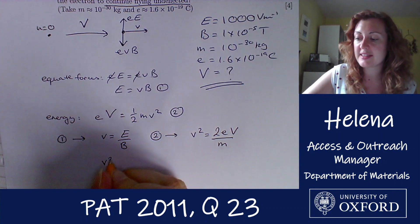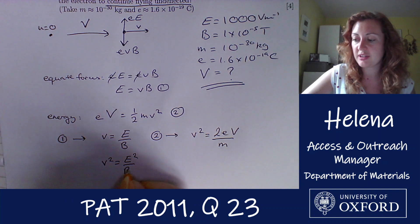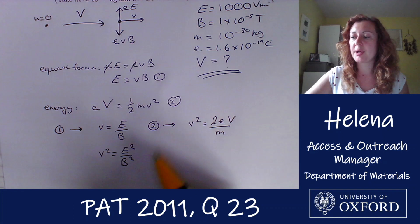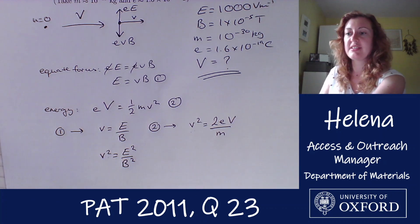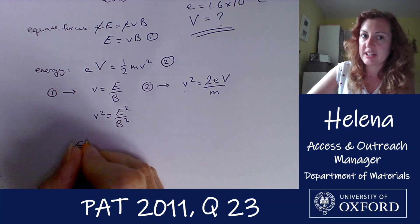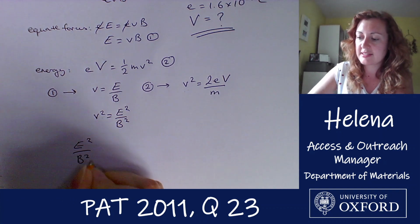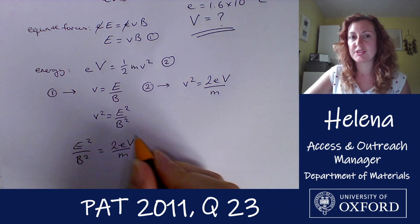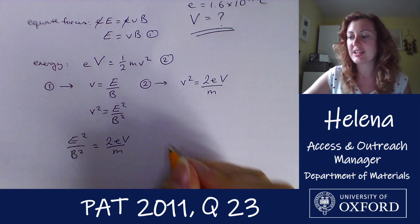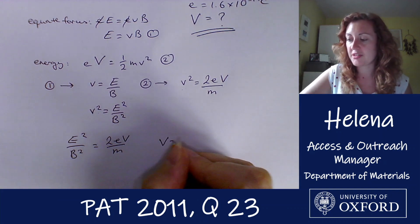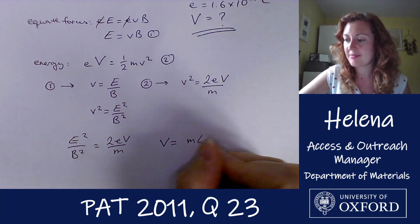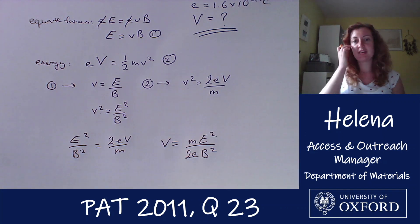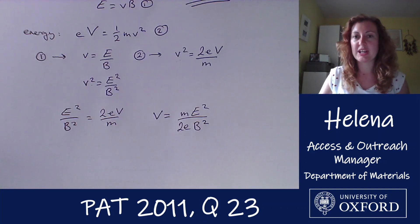So with that in mind I'm going to square this equation, so we have v² on this one too is equal to E² over B². And now what I'm going to do is equate these two equations. So I have E²/B² equals 2eV/m. And I know that I want to find this potential V here, so I'm going to rearrange this equation so that V is the subject. And I can see that we have V = mE²/2eB². There we go. So that's our equation for what we're trying to find.